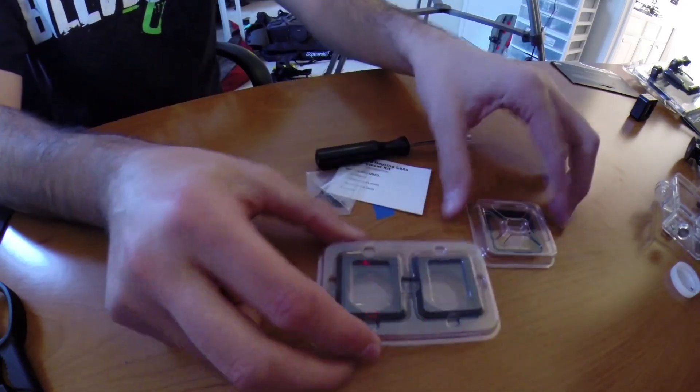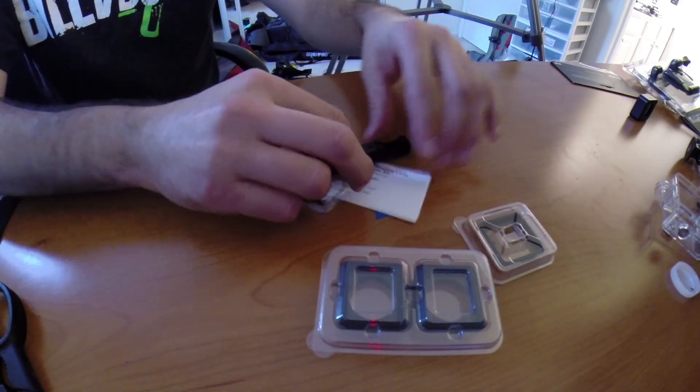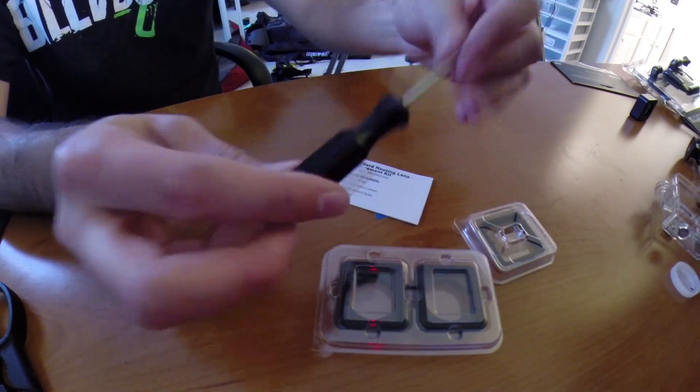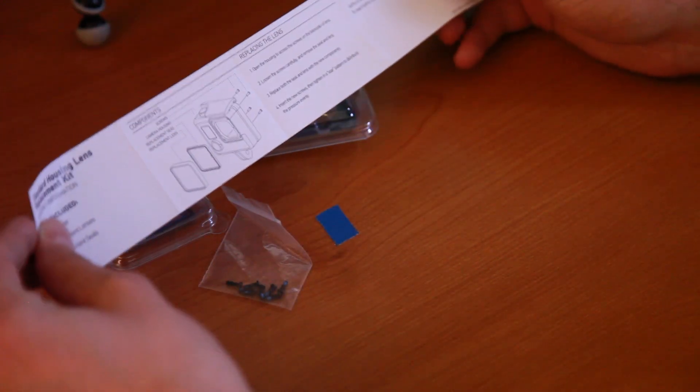So we're going to get the two frames. I do believe this is the sealing pieces. We got our screwdriver, our eight replacement screws, and a little directional sheet here.